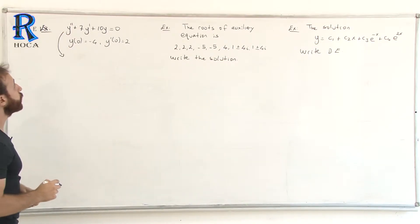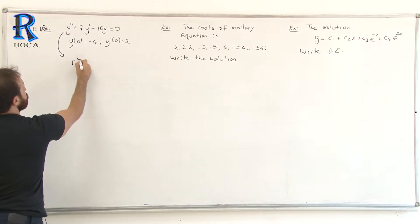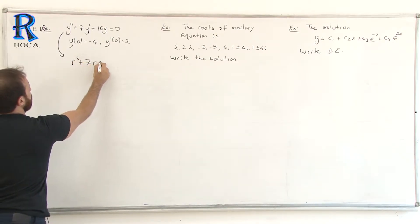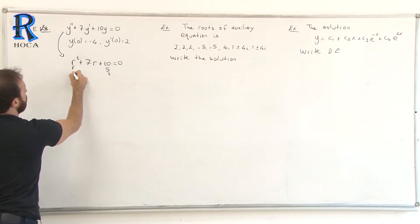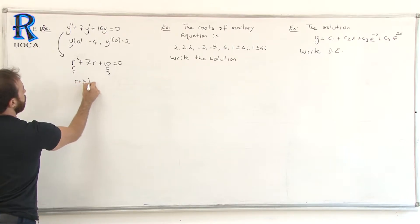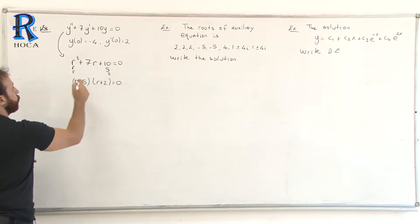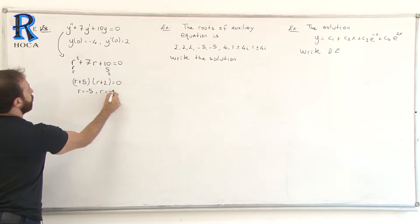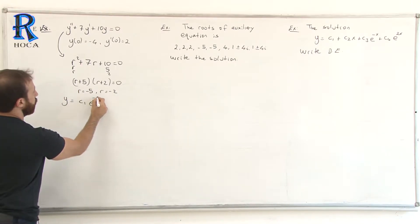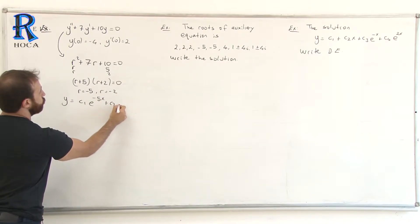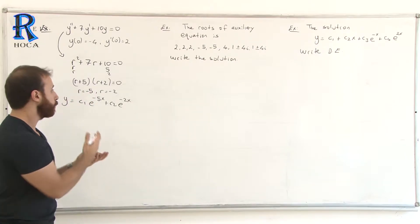Let's write the auxiliary equation for this part. This is a constant coefficient equation, so we use the auxiliary equation: R² + 7R + 10 = 0. Using the sum-product rule, factors are 5 and 2, giving (R + 5)(R + 2) = 0. So R = -5 and R = -2. Therefore, y = C1·e^(-5x) + C2·e^(-2x). They are different roots, so we write them separately.